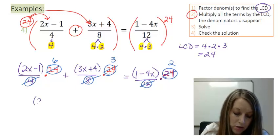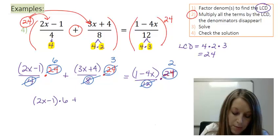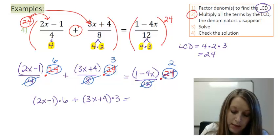I have 2x minus 1 times 6 plus 3x plus 4 times 3 is equal to 1 minus 4x times 2.